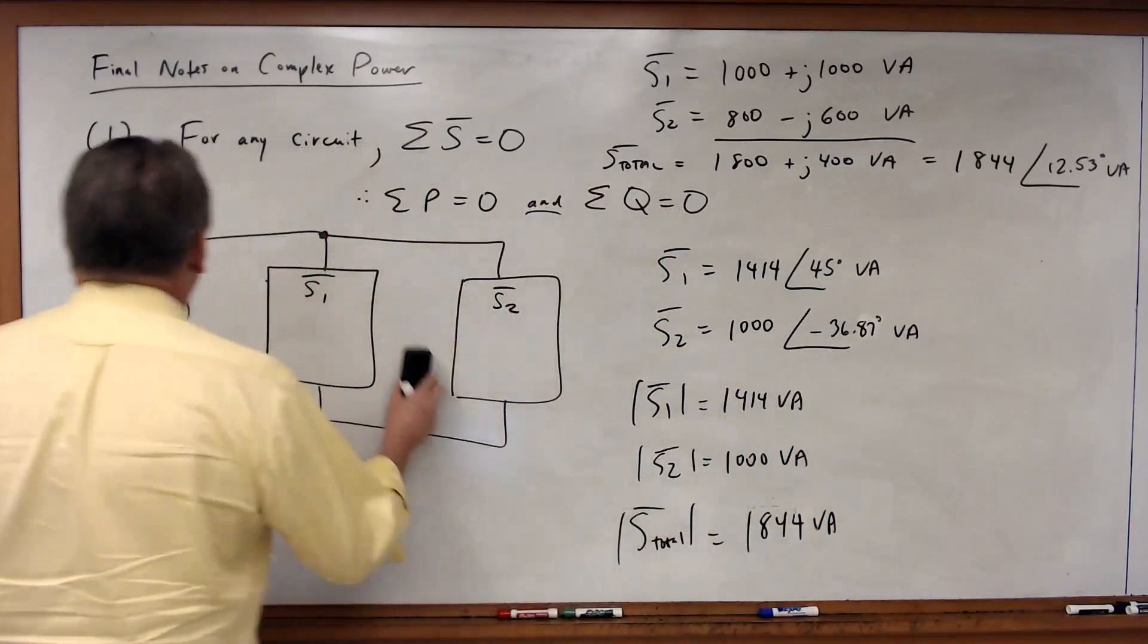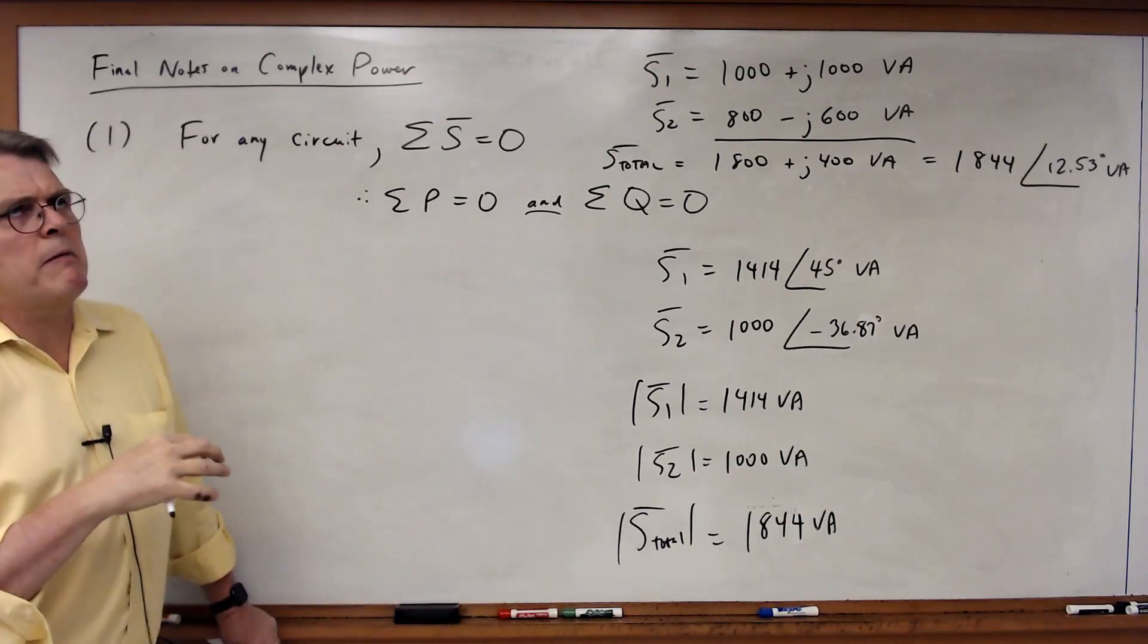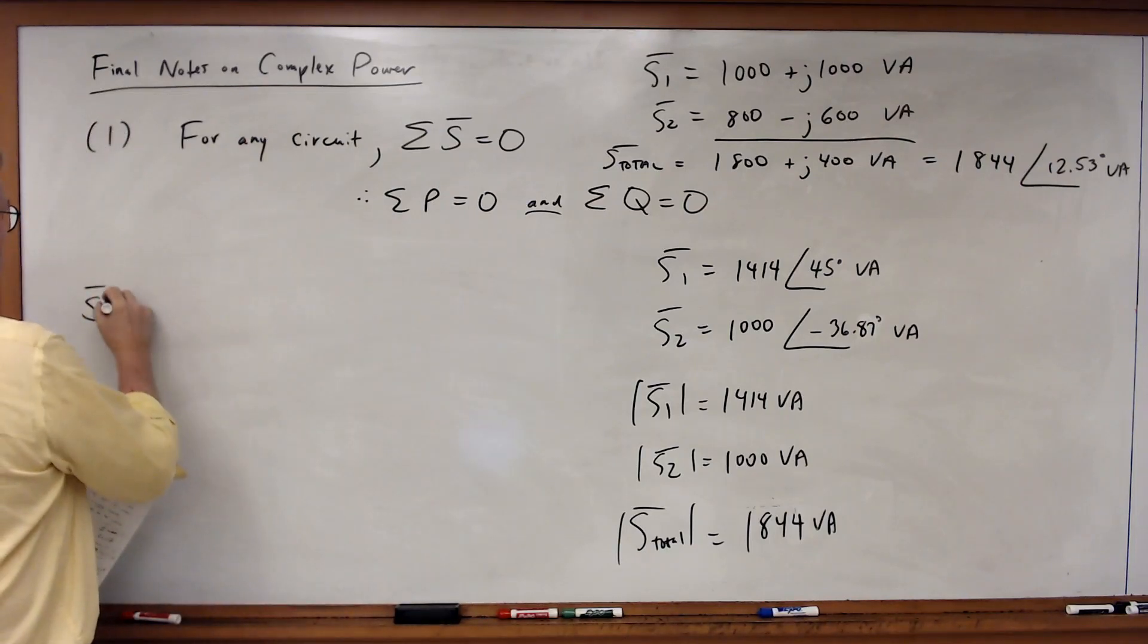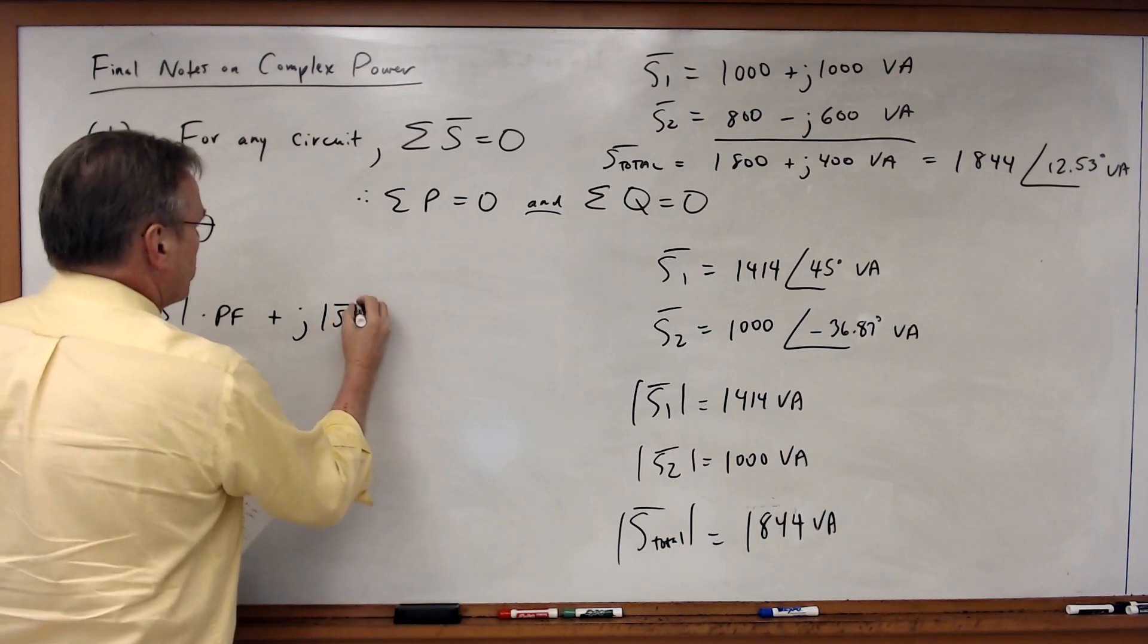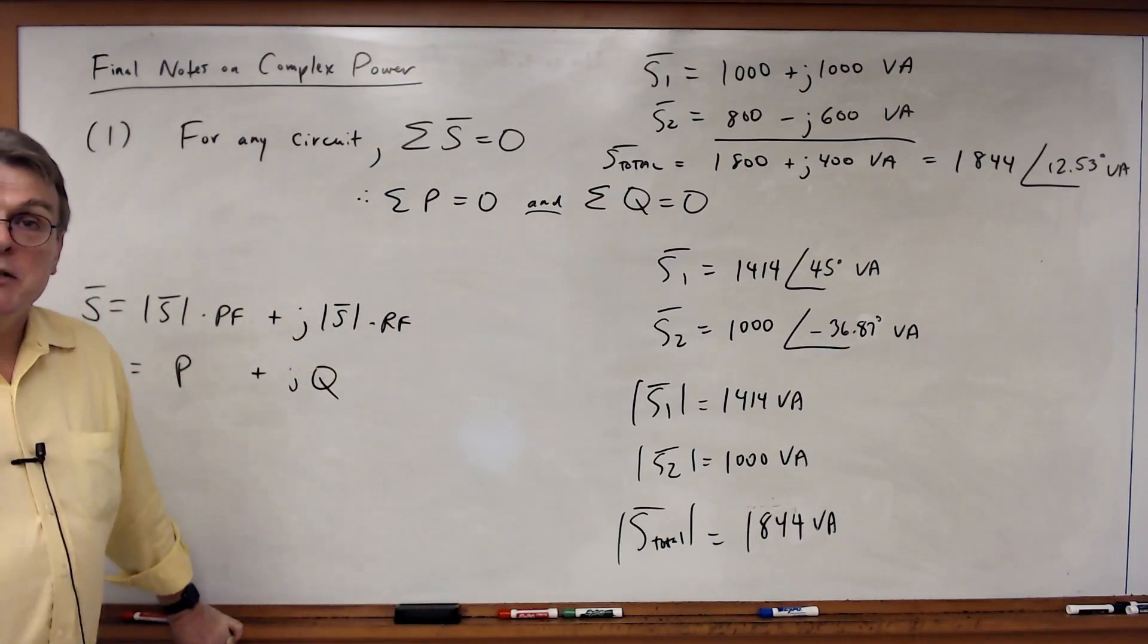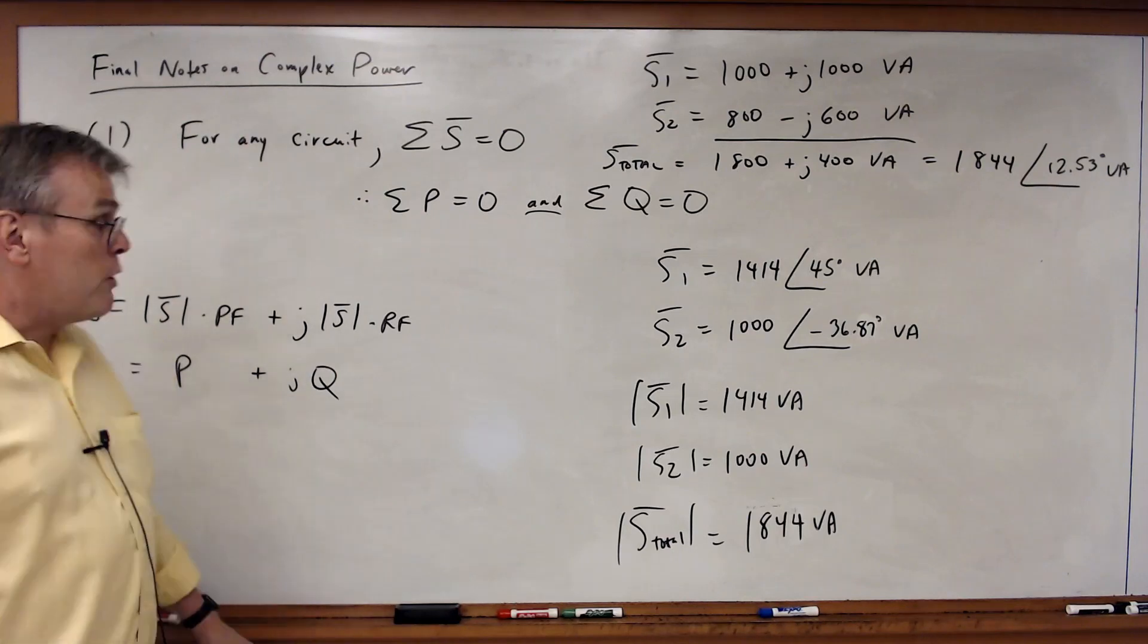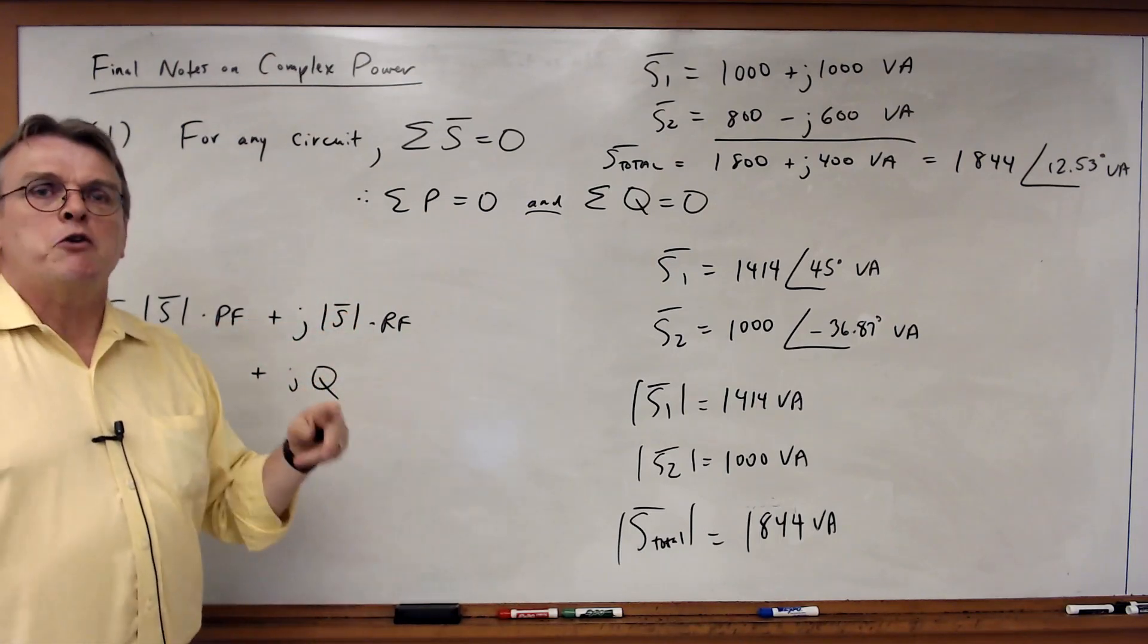Another thing to keep in mind is that you may be given, well I should say complex power can be expressed in different ways. Complex power is equal to the apparent power times the power factor plus j times the apparent power times the reactive factor, as we've already seen, which is equal to P plus jQ. And so you will quite often see complex power expressed in different ways. You may see it expressed in terms of P and Q, or you may see it expressed in terms of the apparent power and the power factor. The point is, given these equations, no matter what two parameters I'm given, you should be able to fill in the rest of the gaps.